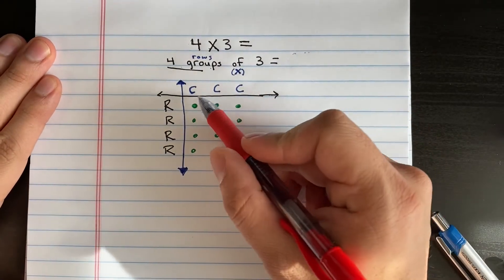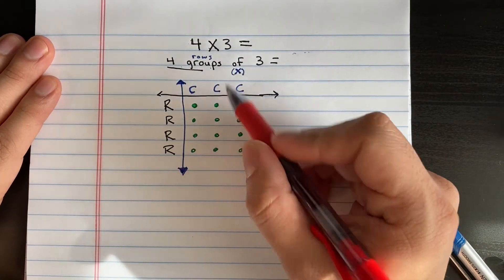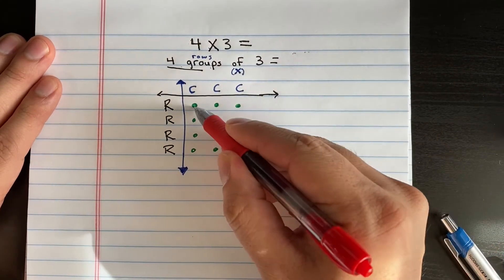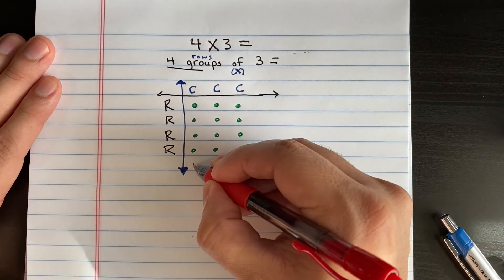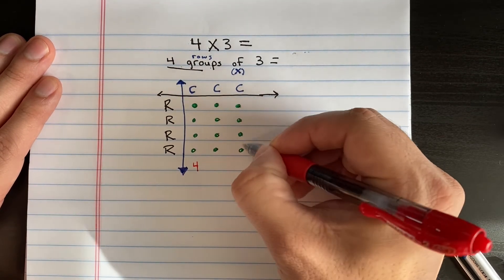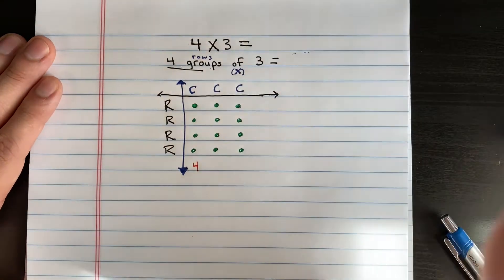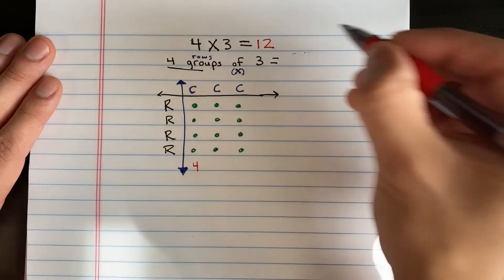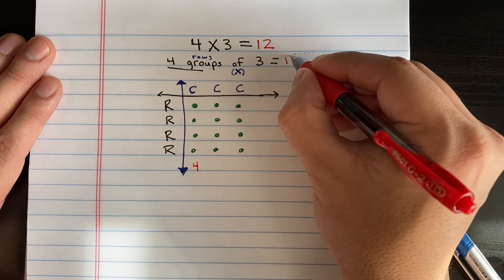All right, now that we have our array model, I'm going to go ahead and count up all the dots to find out what three times four is. So let's count them all up. One, two, three, four, five, six, seven, eight, nine, ten, eleven, twelve. Okay, so now I know that the answer is four times three is twelve, or four groups of three equal twelve.